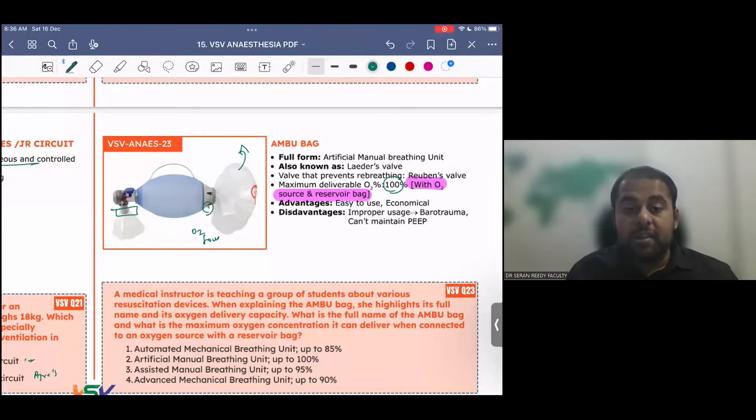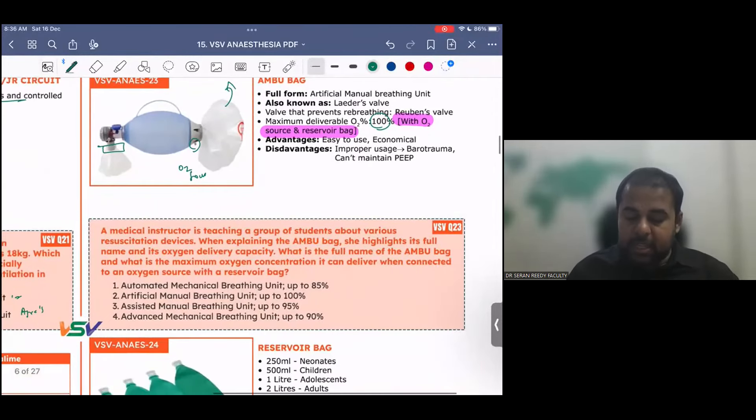The advantages of this, this is easy to use and economical. Disadvantages, if you use improper use, it may lead to barotrauma, and it can't necessarily maintain the PEEP required, positive end-expiratory pressure. A medical instructor is teaching a group of students about various resuscitation devices. When explaining the Ambu bag, she highlights its full name and its oxygen delivery capacity. What is the full name of Ambu bag and what is the maximum oxygen concentration that it can deliver when connected to an oxygen source along with a reservoir bag? Very good. Artificial manual breathing.